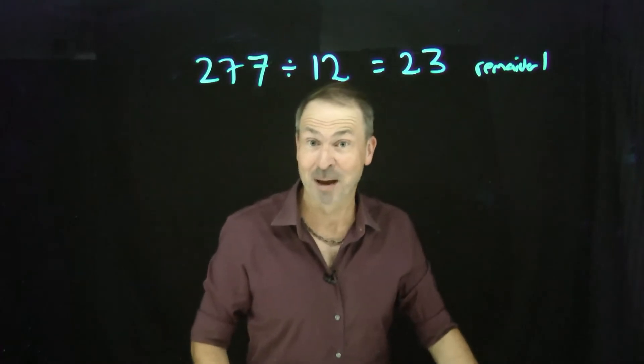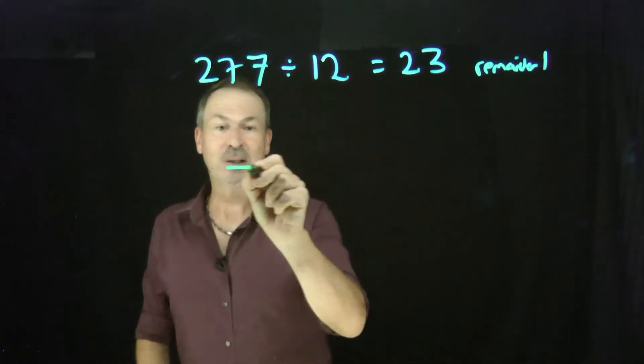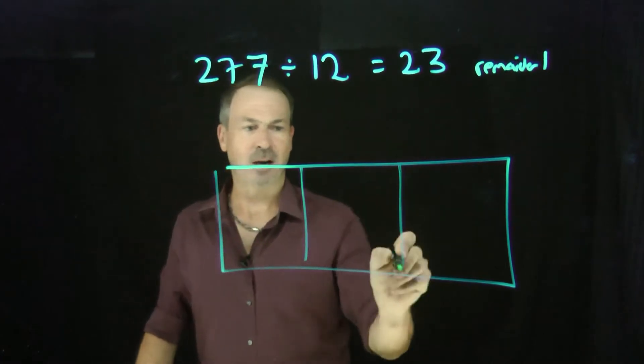So, would I see that in the dots and boxes method? Well, let's find out. Let's draw a picture of 277 this time. Here it goes.